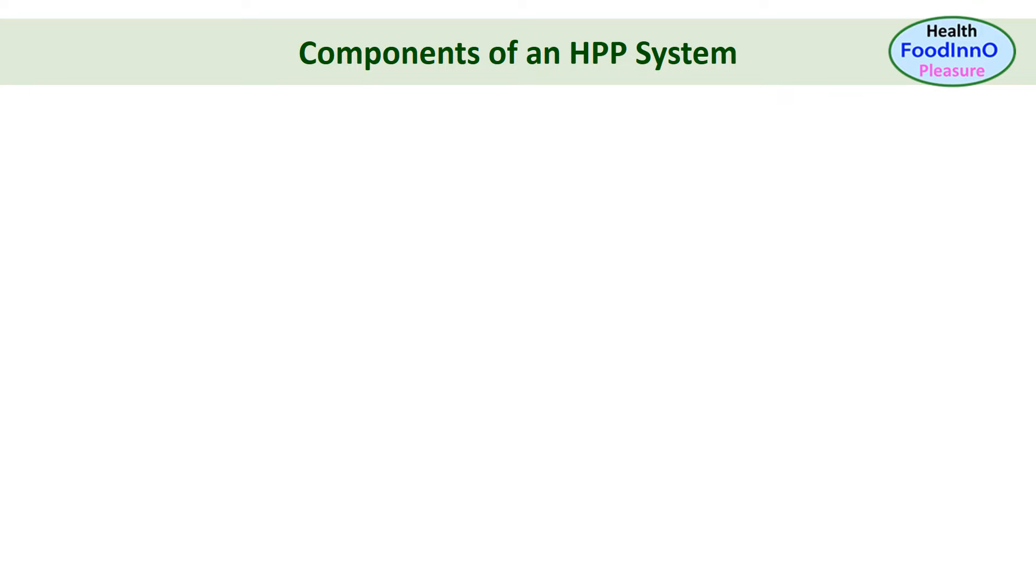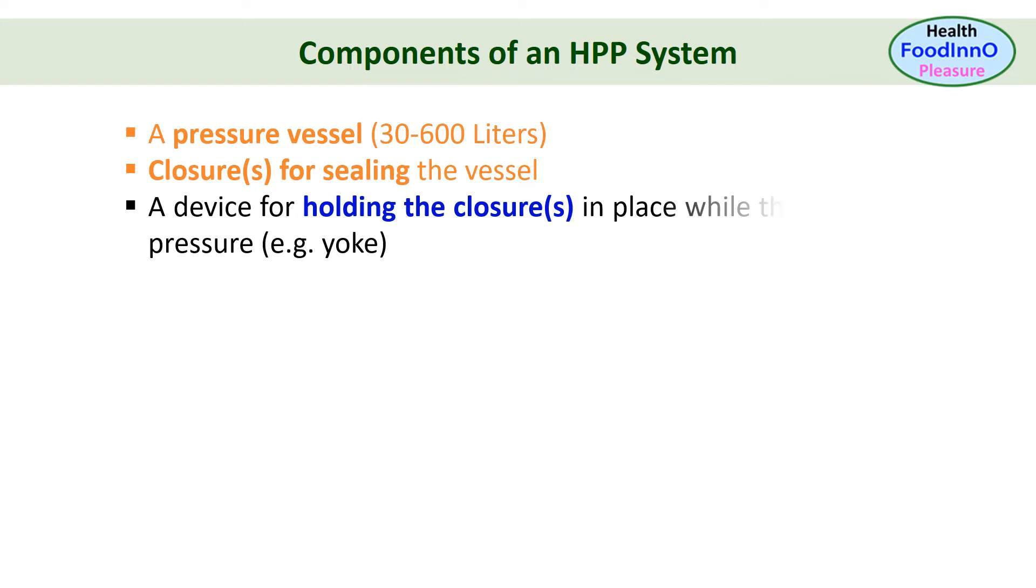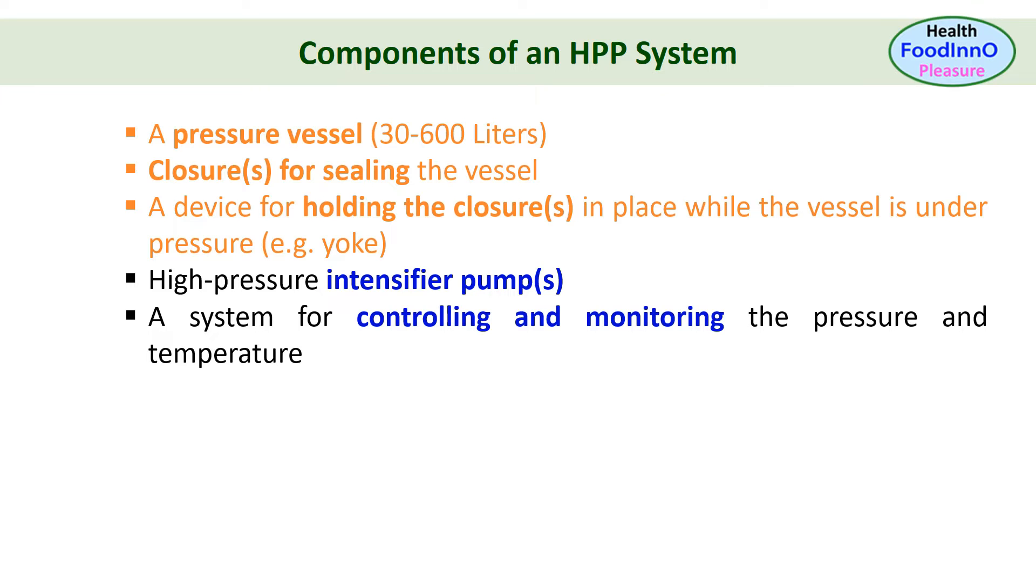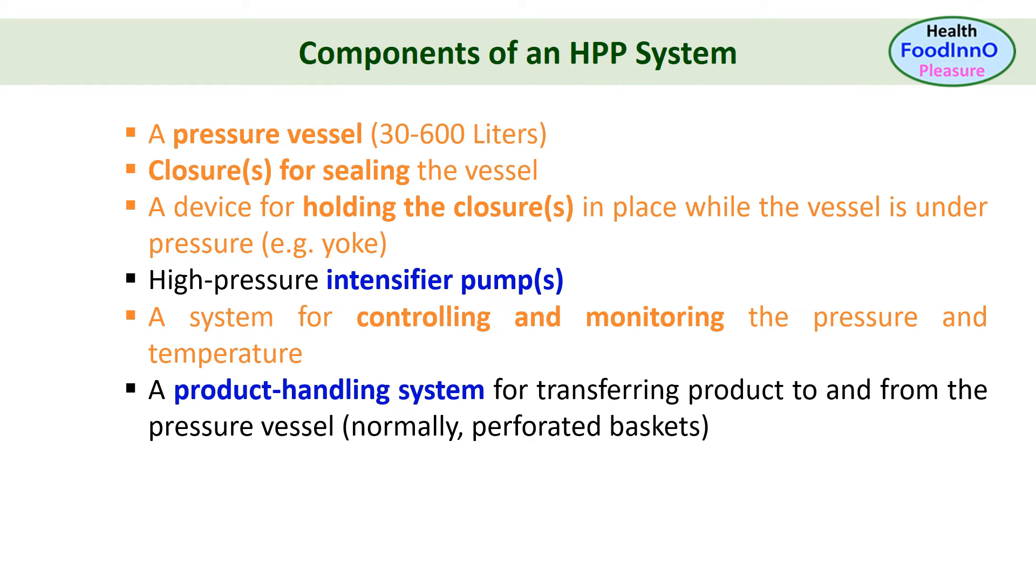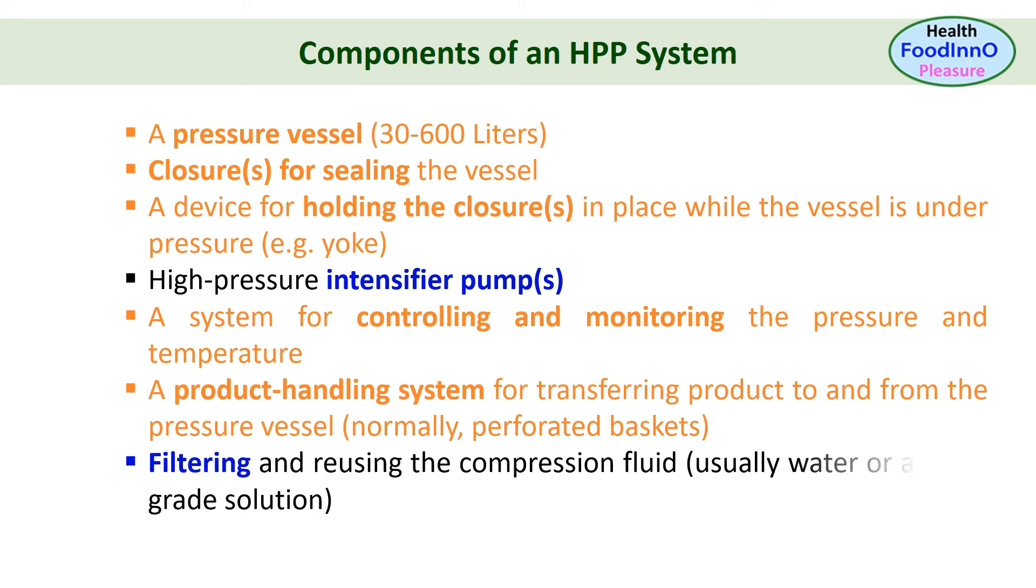The major components of HPP are a pressure vessel, 30 to 600 liters, closures for sealing the vessels, a device for holding the closures in place while the vessel is under pressure, that is the yoke, a high pressure intensifier pump, a system for controlling and monitoring the pressure and temperature, a product handling system for transferring product to and from the pressure vessel, normally a perforated basket, and filtering and reusing the compressing fluid, usually water or a food grade solution.